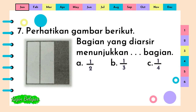Perhatikan gambar berikut. Bagian yang diarsir menunjukkan titik-titik-titik bagian. A. Satu per dua. B. Satu per tiga. C. Satu per empat. Jawaban yang benar adalah B. Satu per tiga.